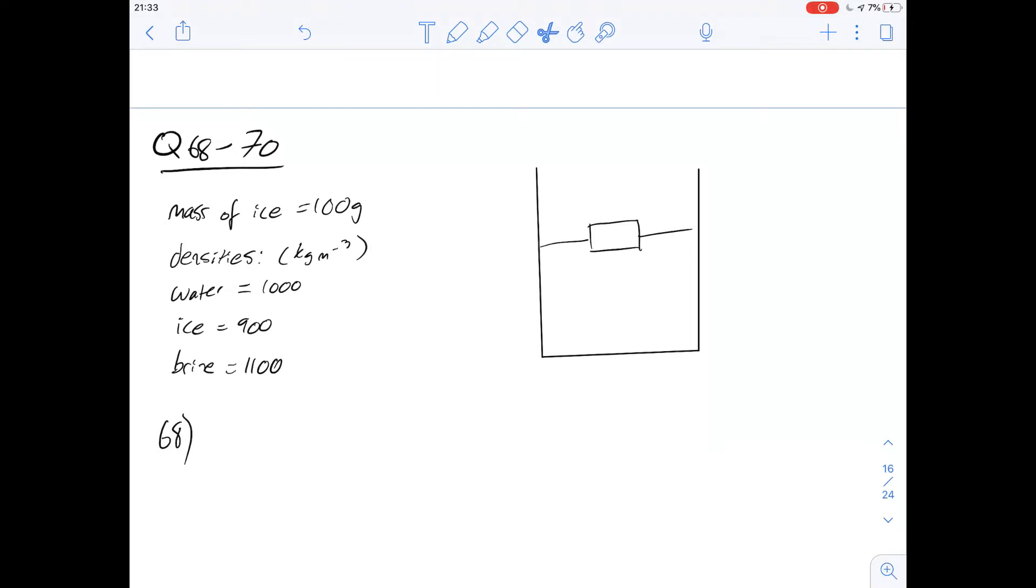which is about an ice cube being placed into a strong brine solution at room temperature. So 68 says after the ice is placed in the brine solution and before any of it had melted, the level of the brine solution was closest to what?